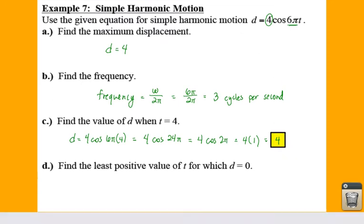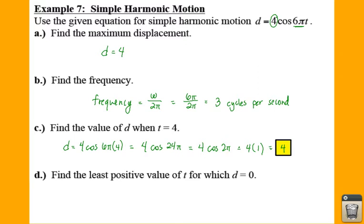So then finally, for the last part here, if you want to find the least positive value of t for which d is equal to 0, you just set your equation equal to 0. So I'm going to say 0 for d equals 4 cosine of 6 pi t. And you're going to have to divide by 4. So we get 0 equals cosine of 6 pi t. And what that means is you need to find out where the cosine of t is equal to 0. So that means your x values have to be 0. So on your circle, that'd be it.